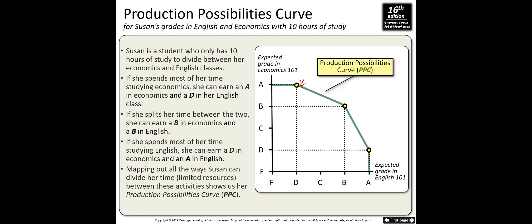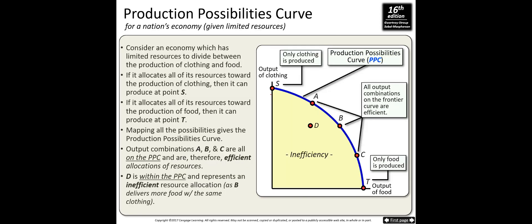If she spends most of her hours studying economics, she gets an A in economics and a D in English. If she splits her time equally, she gets a B in both subjects. If she focuses on English, she gets a D in economics and an A in English. The production possibility curve maps out all the ways Susan can divide her limited time between these activities.